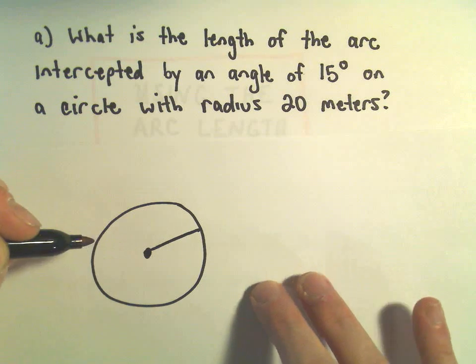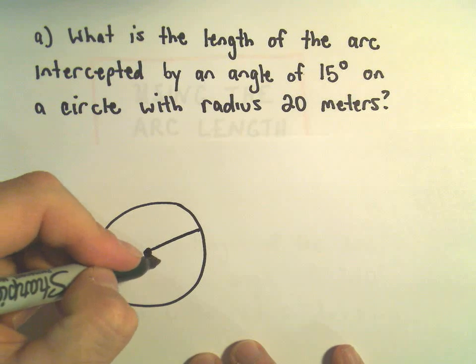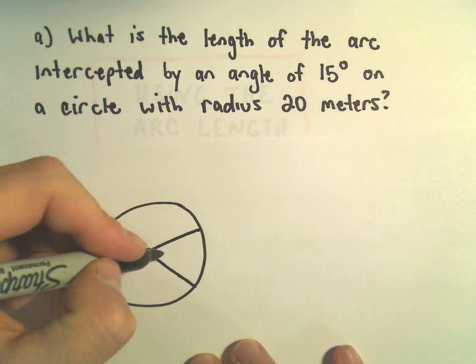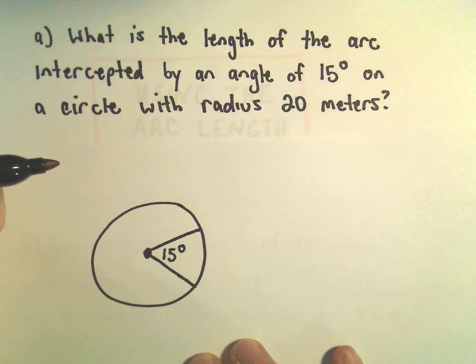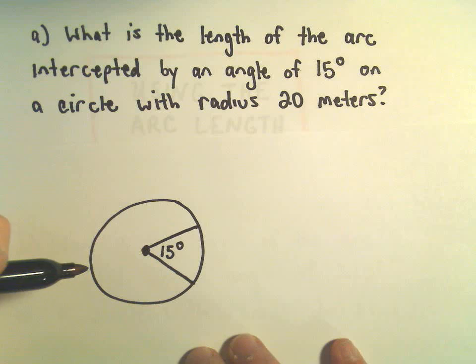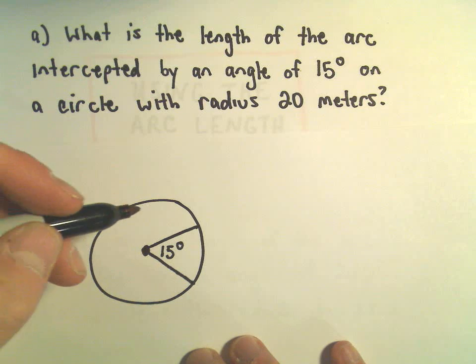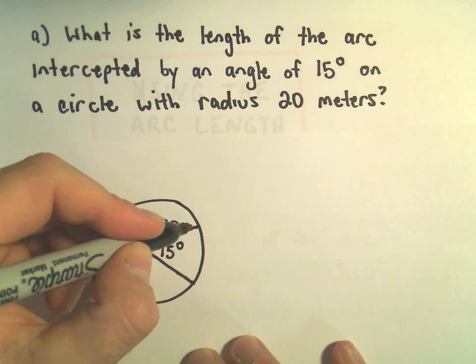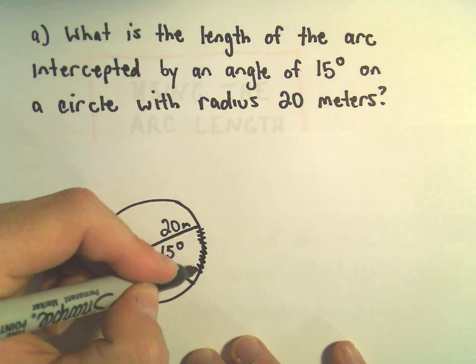This point has definitely got to be in the center of the circle. But we've got some angle here, 15 degrees, it's a little bigger than 15 degrees, but just trying to fit everything in there. The radius here is 20 meters, and we're just trying to find this little length here.